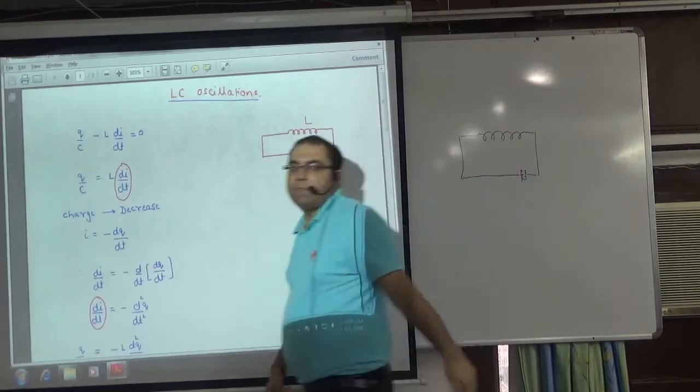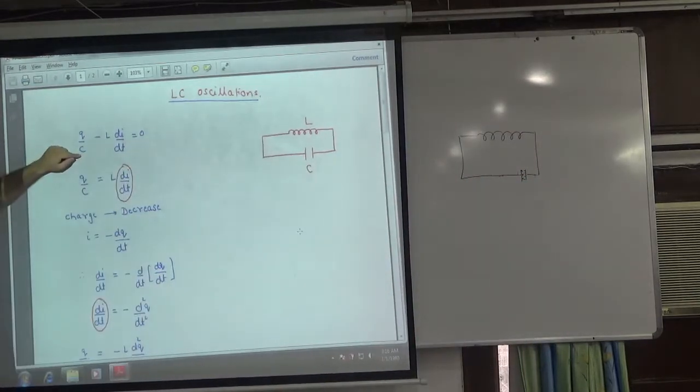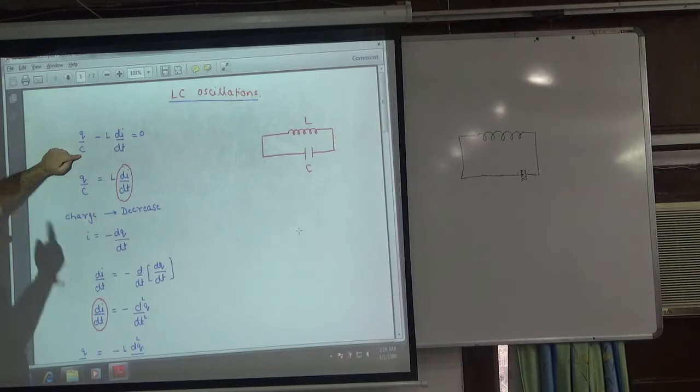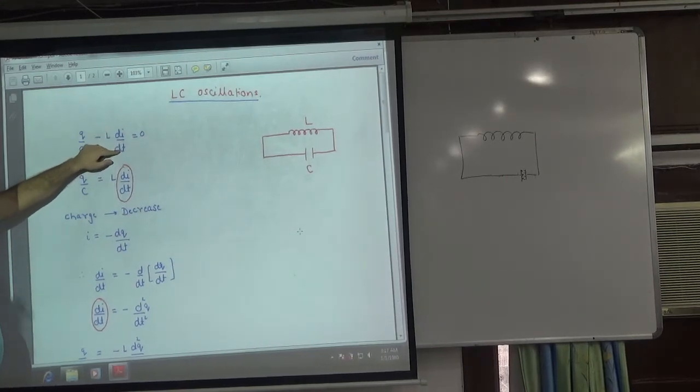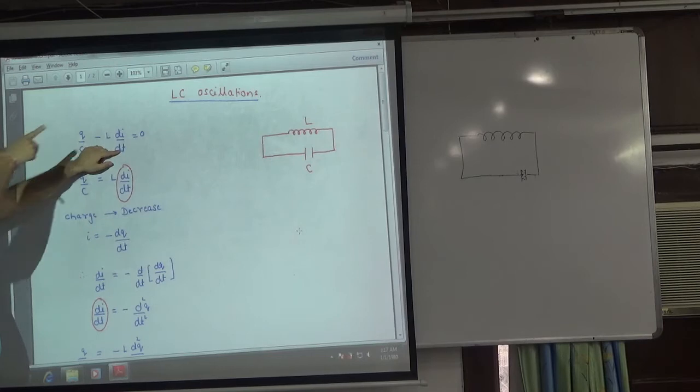How much voltage developed in the capacitor? Q by C. In the inductor, how much will the capacitor discharge? Minus L di by dt. And the total EMF must be equal to zero.